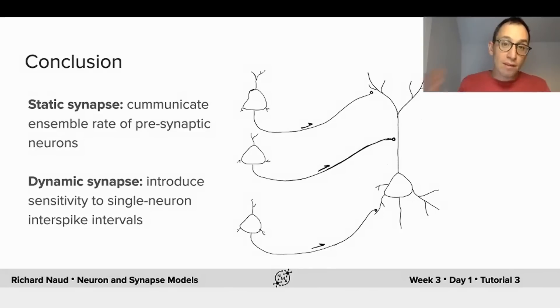So this is what I want to conclude from this lecture. Static synapses communicate the ensemble rate of all the presynaptic neurons. Dynamic synapses, synapses with short-term facilitation or short-term depression, are introducing a sensitivity to the single neuron interspike interval and are communicating something slightly different.